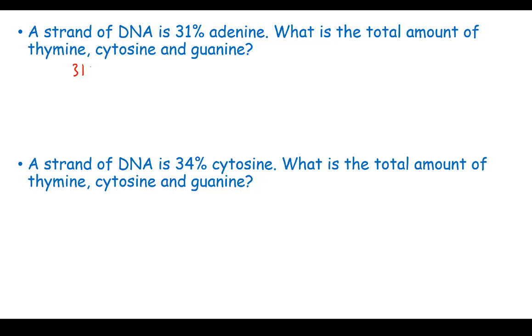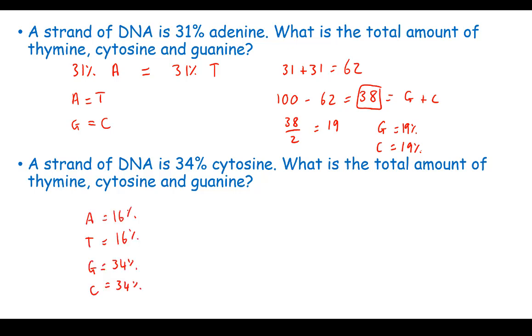If a strand of DNA is 31% adenine, what is the total amount of thymine, cytosine, and guanine? Well, remember A must equal T and G must equal C. So if 31% is adenine, that means 31% is thymine. 31 plus 31 is 62. 100% minus 62 equals 38. Now that 38% is equal to G plus C. So if we do 38 divided by 2, we get 19. That means 19% of it is guanine and 19% is cytosine. Pause it here and see if you can work out the next one. And here's the answer to the next one.